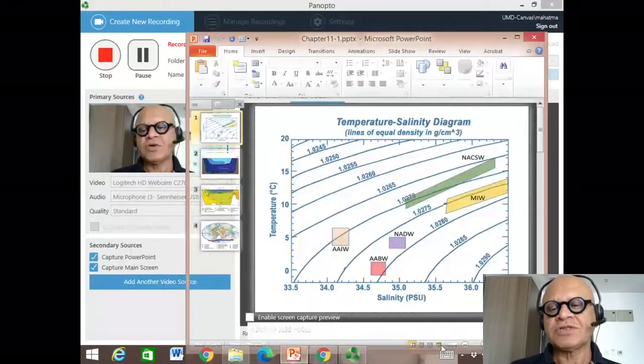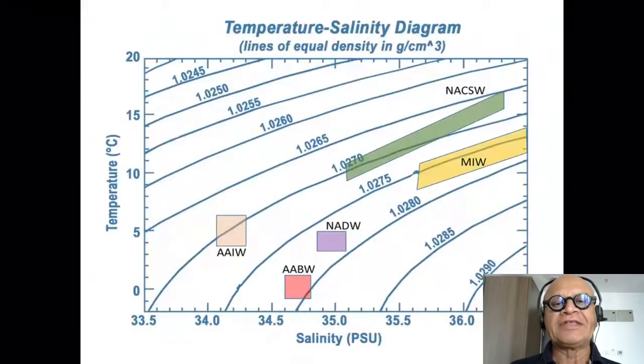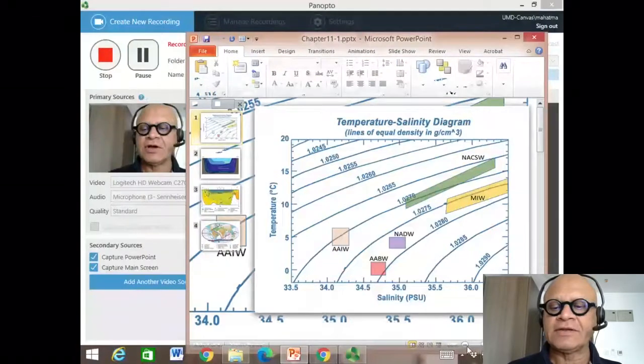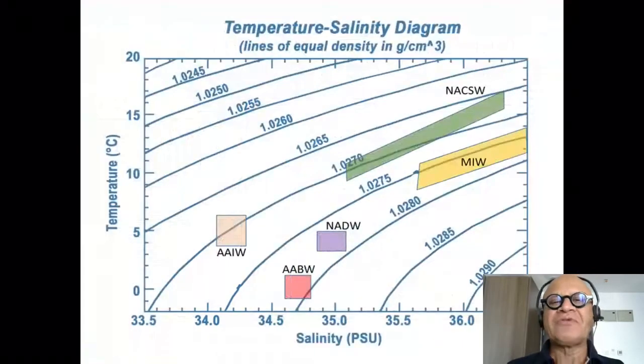This chapter is on the thermohaline circulation. We already said that we cannot really separate wind-driven and thermohaline circulations, but nonetheless we already went through wind-driven circulation and we will do the same now for the thermohaline circulation.